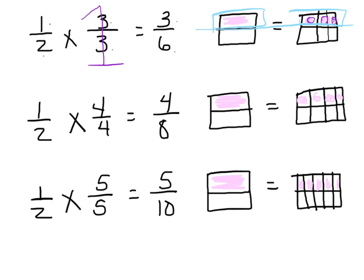Now let's take a look at one half times four fourths — again, it's the giant one, because four over four does equal one. One times four is four, two times four is eight. One half equals four eighths. And one half times five over five: five over five equals one. If I have five out of five, that's the whole thing. One times five is five, two times five is ten. One half, five tenths — equal or equivalent.